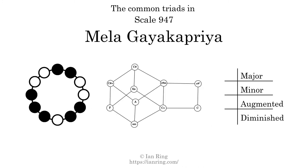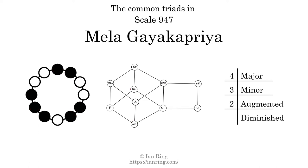Here are the common triads present in this scale. The diagram in the center is a graph of parsimonious voice leading between triads. There are four major triads, three minor triads, two augmented triads, and one diminished triad.